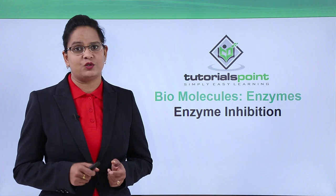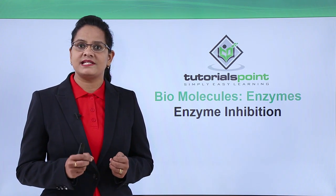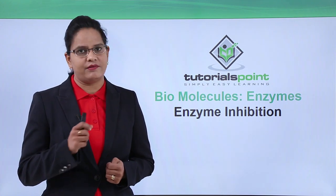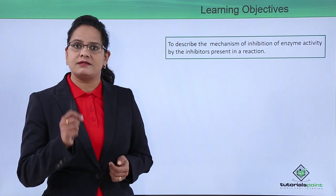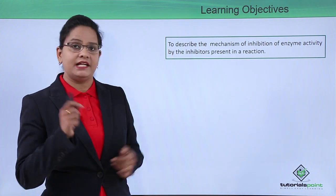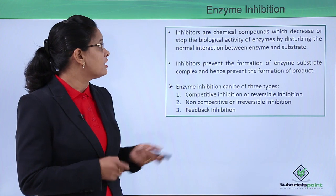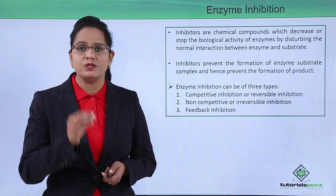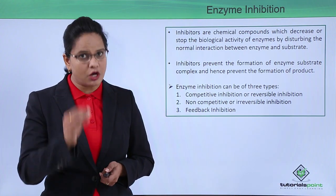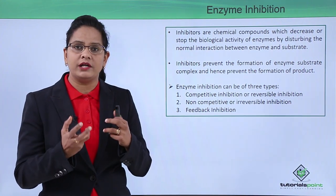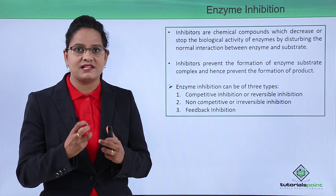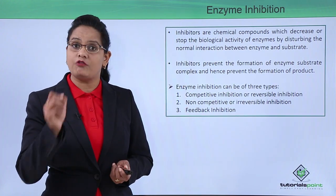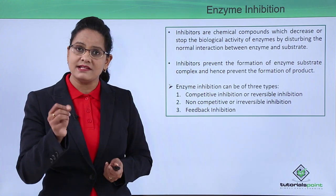Welcome to Tutorials Point. In this video we will see how the activity of an enzyme is decreased or stopped by the presence of inhibitors in a reaction. We will describe the mechanism of inhibition of the enzyme by inhibitors. Inhibitors are chemical compounds which decrease or stop the activity of the enzyme by disturbing the conformation of the enzyme and disabling the interaction of the enzyme with the substrate, preventing the formation of the enzyme-substrate complex and hence the formation of the product.